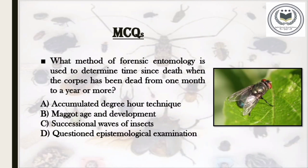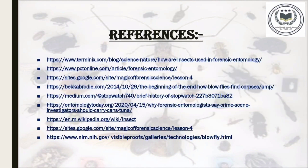The MCQ question is: What method of forensic entomology is used to determine time since death when the corpse has been dead from one month to a year or more? Option A: Accumulated degree hour technique. Option B: Maggot age and development. Option C: Successional waves of insects. Option D: Cautioned epistemological examination. Do share your answers in the comment section and the correct answer will be uploaded in the upcoming video.